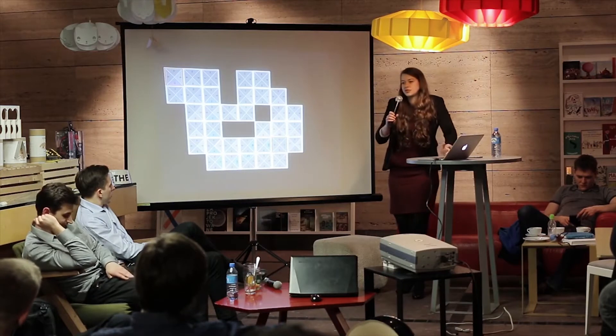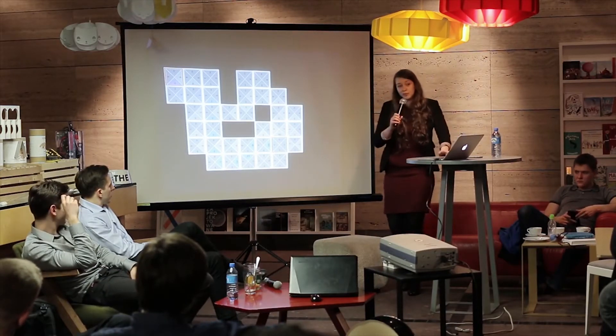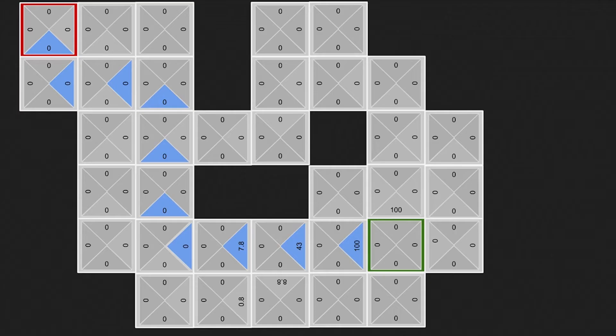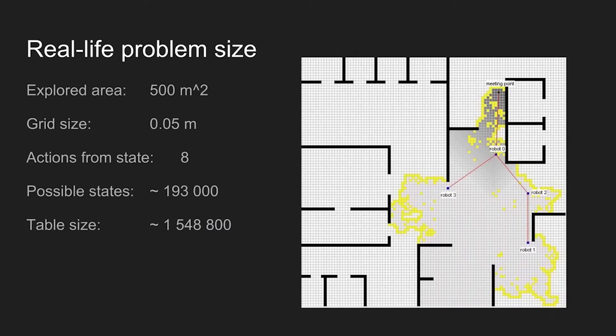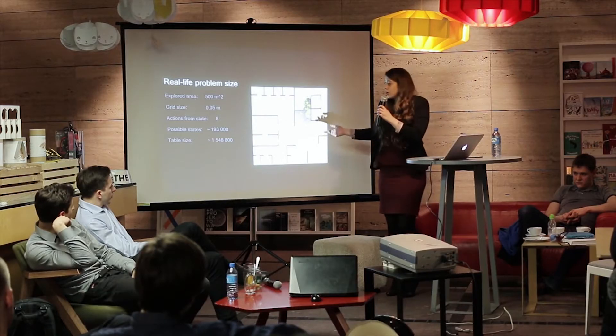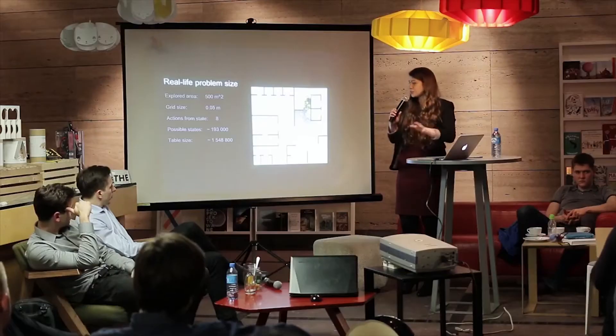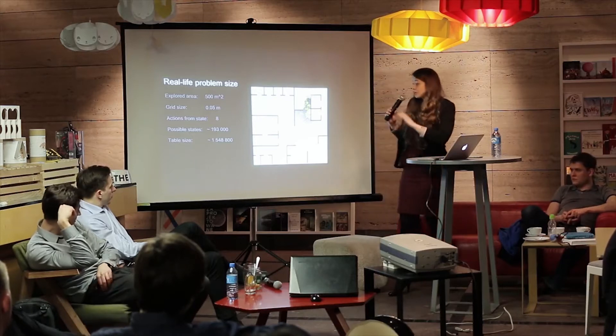This value is stored in tables. This is a small problem, so the table won't be big. But for real-life problems — for example a robot that has to explore some floor — we assume the area is 500 square meters, the grid is small, and there are just eight actions. But robots sometimes have more practical actions, much more area to cover. With just this example the table size is 1.5 million states. It doesn't scale. No one likes this kind of problem, especially if you have an embedded system.